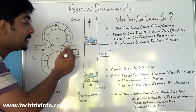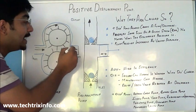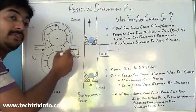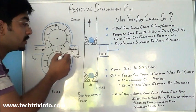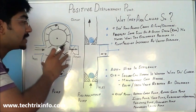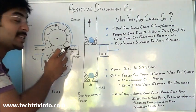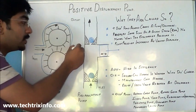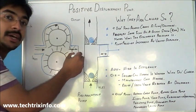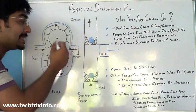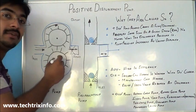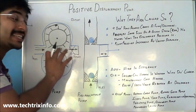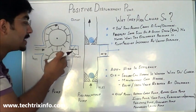As the pressure develops further, it will result in the mechanical failure of this pump. That's why a positive displacement pump can never work with a closed discharge unless it has a relief valve or a safety valve inside it.